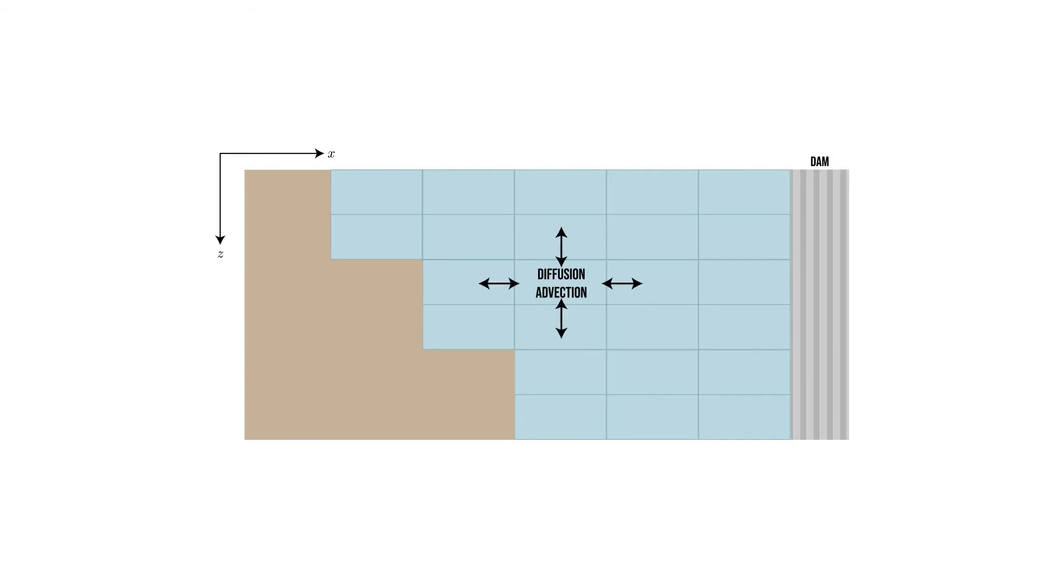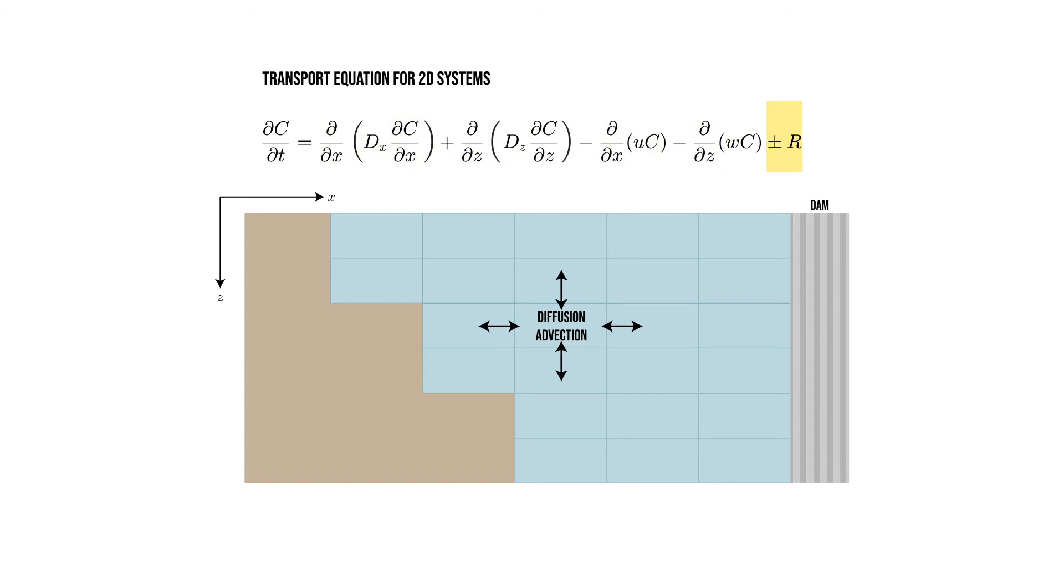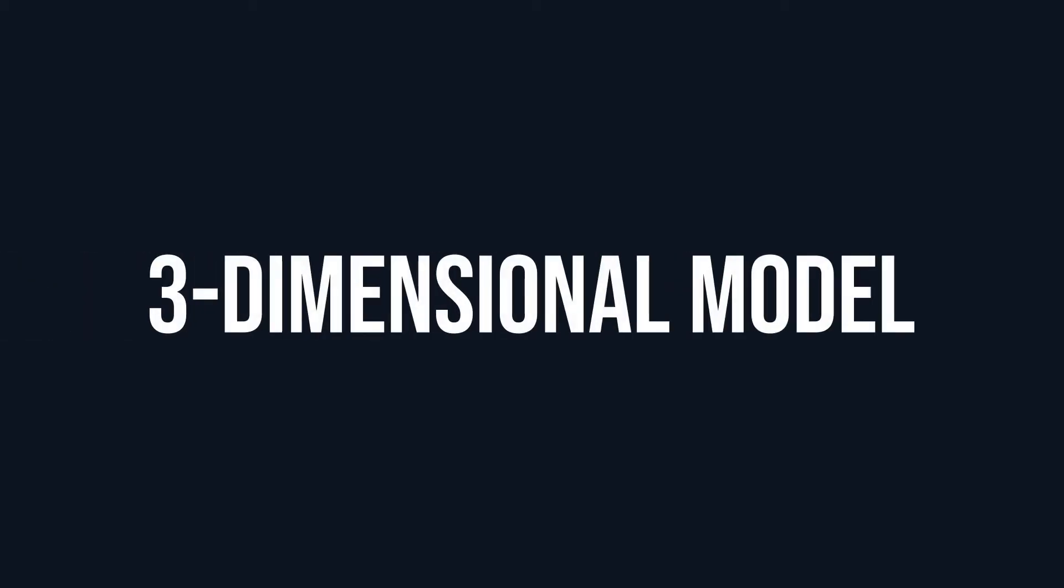Here, advection and diffusion happen in both the x and z directions, as seen in the transport equation. Accordingly, the concentrations of water quality variables change in the x and z directions, due to physical transport, diffusion and advection, and biogeochemical processes. If the proper amount of biogeochemical complexity is added to represent the nutrient phytoplankton dynamics, two-dimensional water quality models are suitable for modeling eutrophication in long, narrow reservoirs.